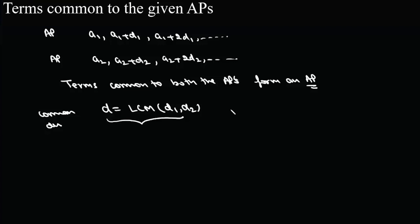By observation or by using the initial few values, we can calculate A, which is the first common term. Once we have the first common term and the common difference, we can solve whatever is desired in the given question.